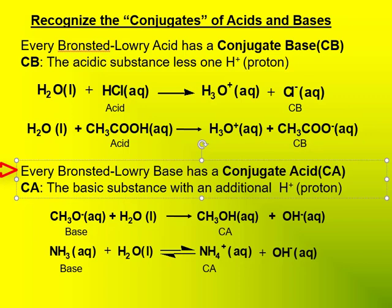Conversely, every Bronsted-Lowry base has a conjugate acid, which we'll abbreviate capital C, capital A. The conjugate acid is the basic substance with an additional hydrogen ion. In the case of CH3O-, its conjugate acid is CH3OH.